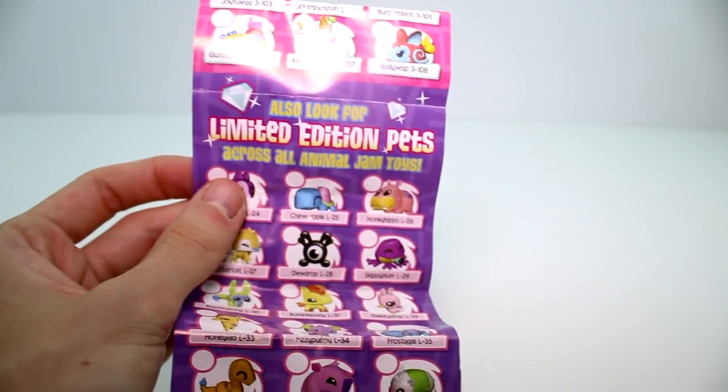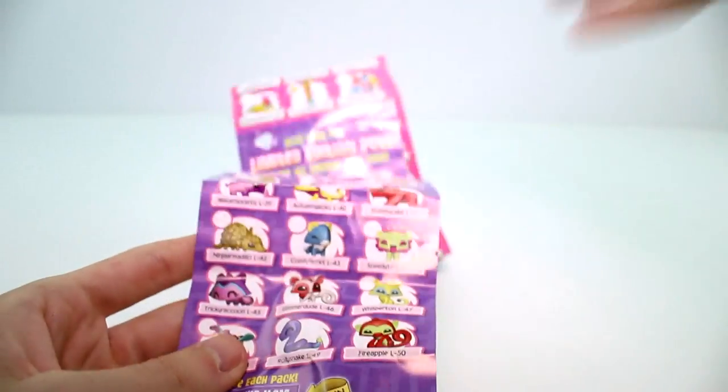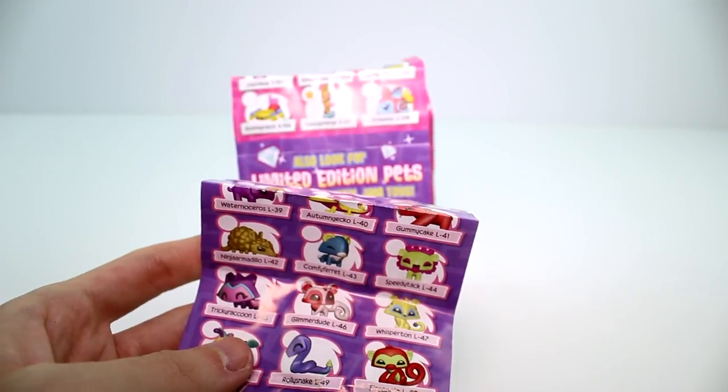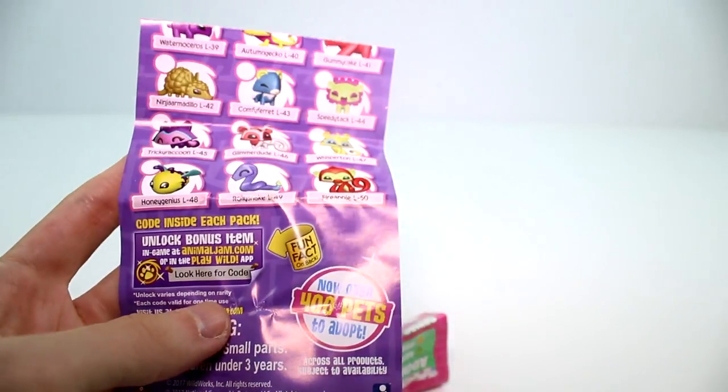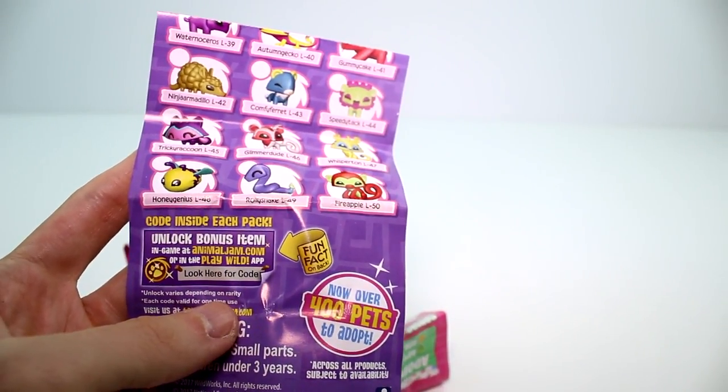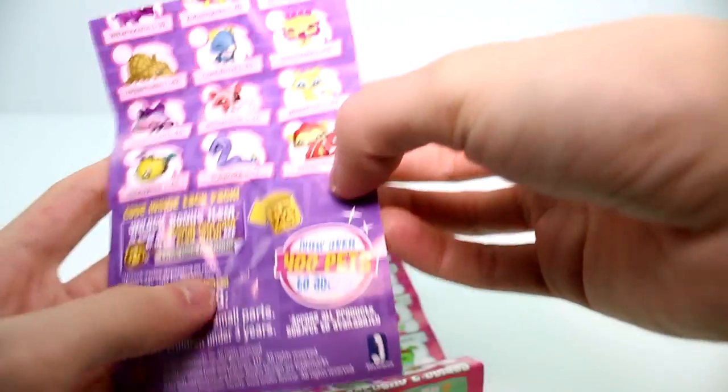Whoops I just punched the camera, but you can look for the limited edition pets across all Animal Jam toys, the five packs, the blind packs probably. And then you get a code that you can redeem in-game. There's also a fun fact about an animal on the back, which is really cool. I love how they do that.